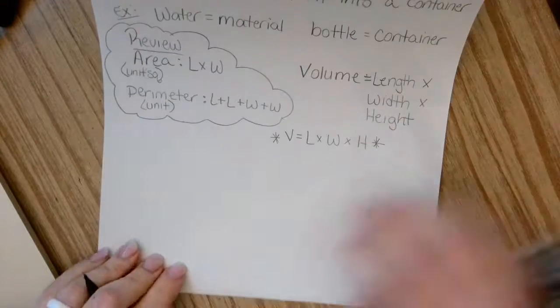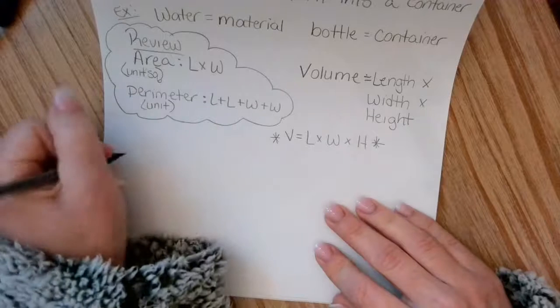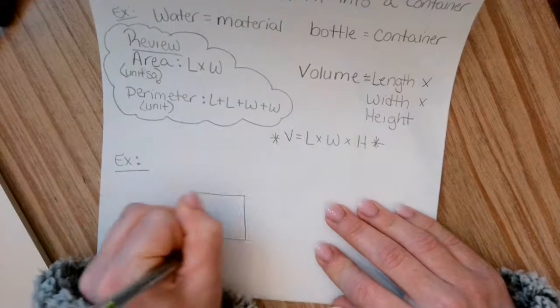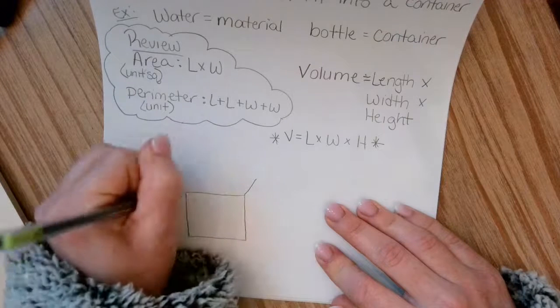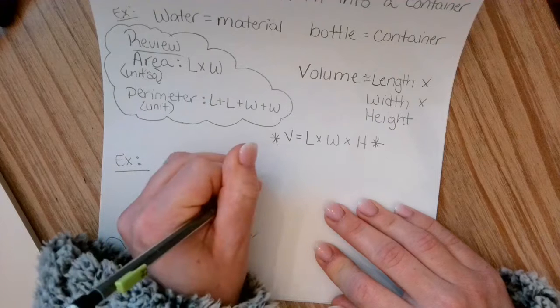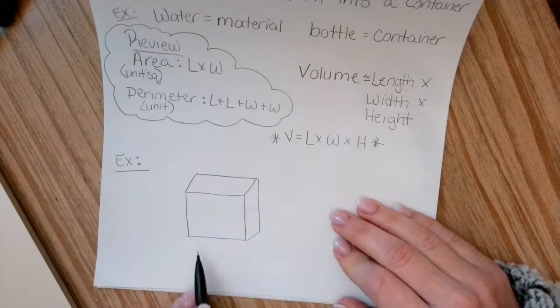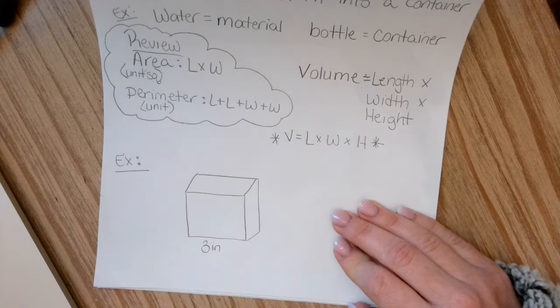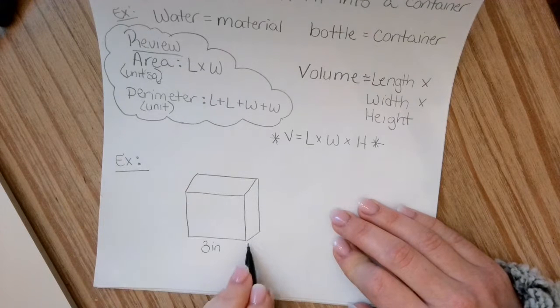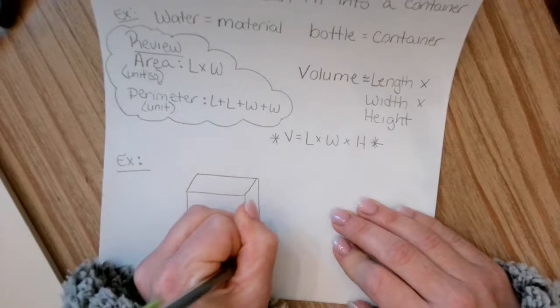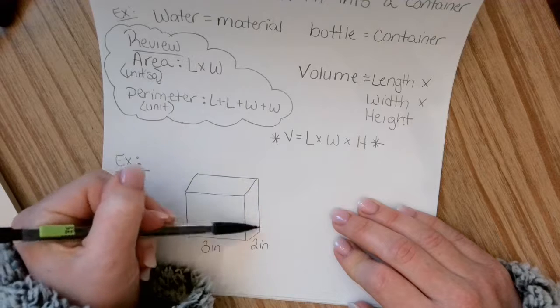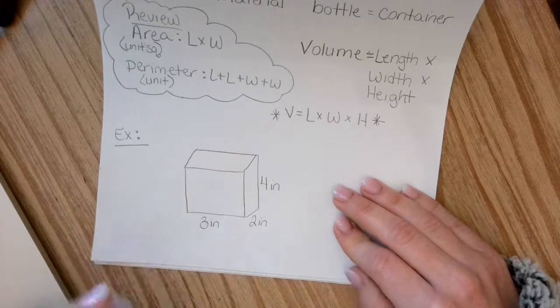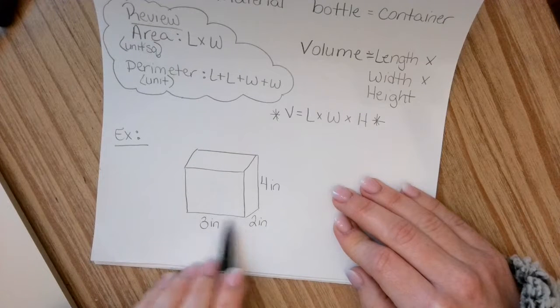So let's do an example. So let's say that I have a cube that has these measurements. So let's just pretend that the length is going to be three inches. And then let's say that the width, which is right here, is going to be two inches. And then we'll say the height, which is right here, is going to be four inches. So let's label these before we actually do the math problem.